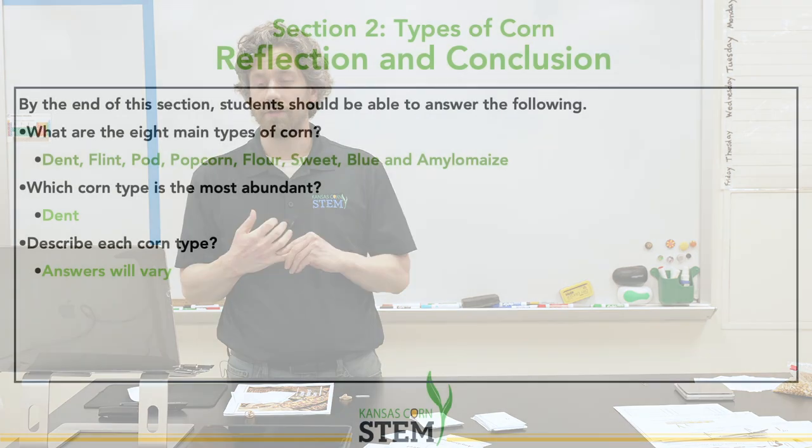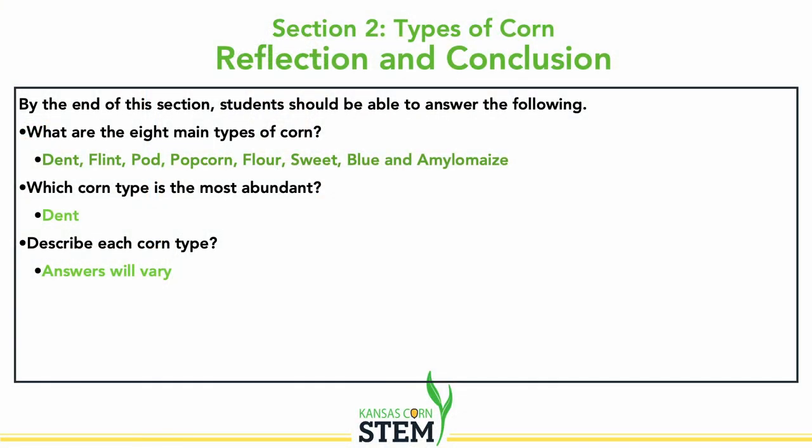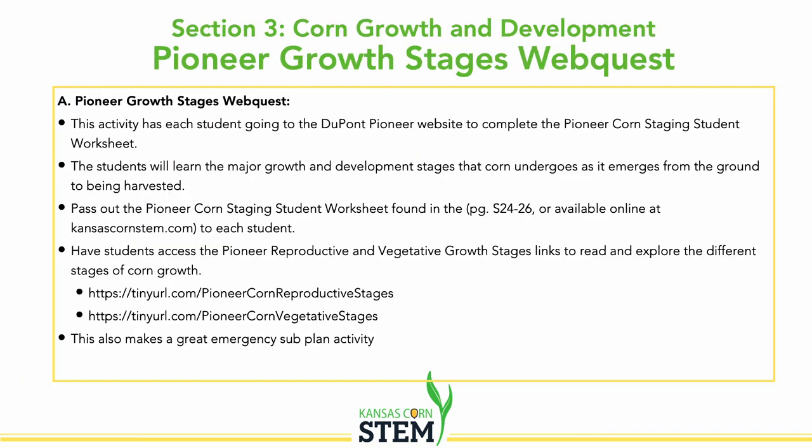At the end of section two, we want to know all eight types of corn: dent, flint, pod, popcorn, flour, sweet, blue, and amylomaize. The most abundant is dent corn. Kids can then describe each corn type — answers will totally vary.